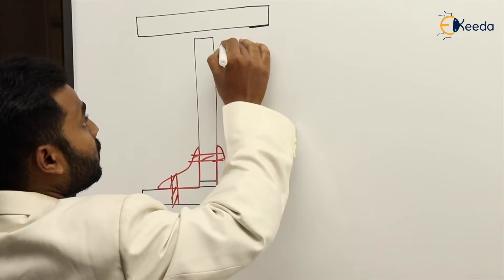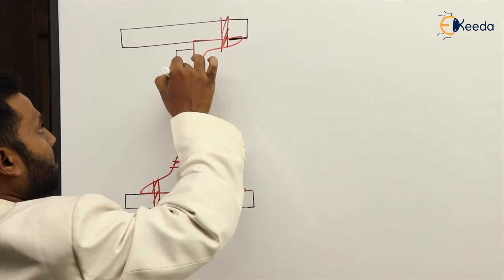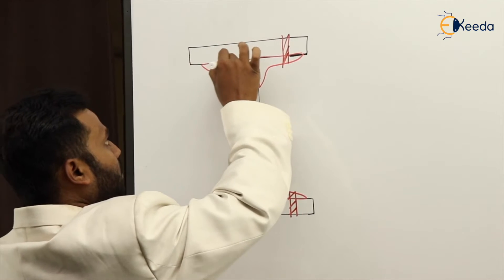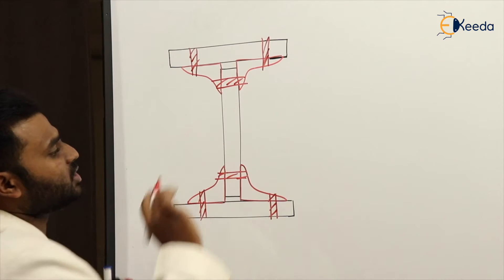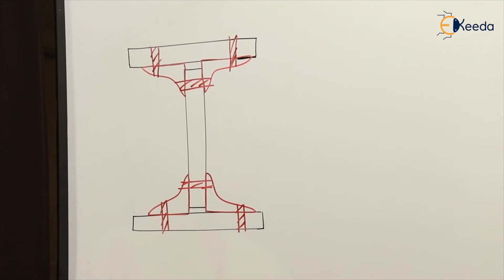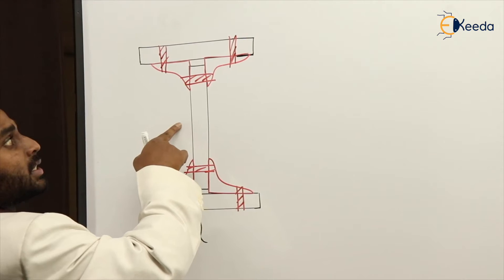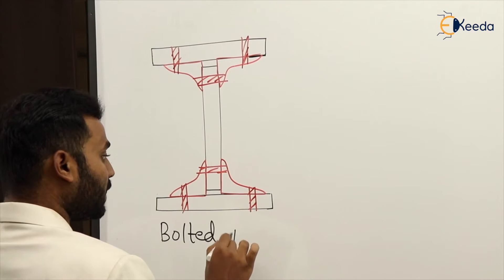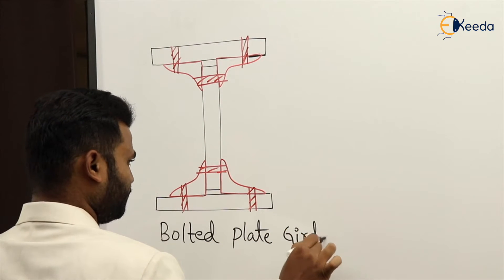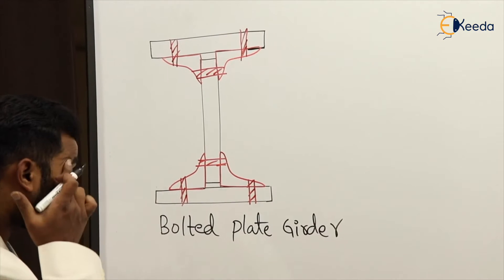The angle is applied to the bottom flange, and at the top we also use two angles. This is the bolted plate girder — by using bolts we have connected these three plates in the form of an I-section. So this is known as a bolted plate girder.